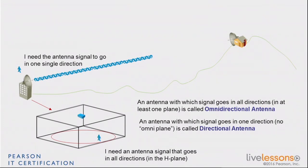A directional antenna can send a lot or a little bit, but it's going to send more in one direction. If you put your access point in a room where it has to cover all around — like a meeting room — you're going to use what we call the omnidirectional antenna. The omnidirectional antenna does not necessarily send like an isotropic antenna in a sphere, but it sends at least 360 degrees in one of the planes, in the H plane.